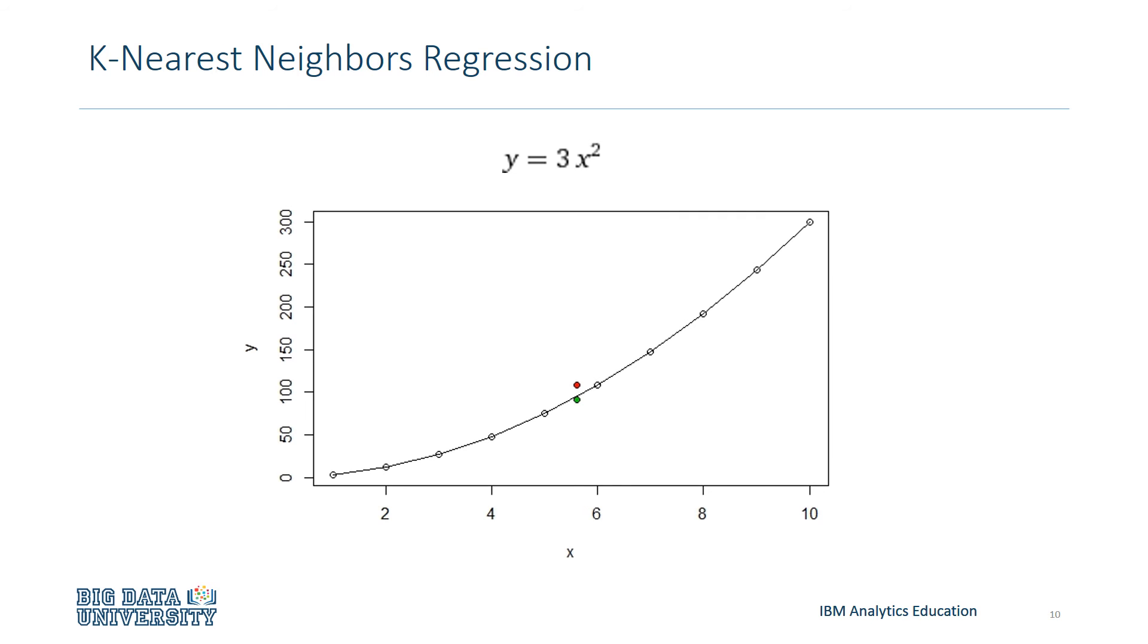First, let's consider the one-nearest-neighbor method as an example. In this case, we search the training set and locate the one closest to the query point X. For this particular case, this happens to be X6. The outcome of X6, that is, Y6, is then taken to be the answer for the outcome of X, which is denoted as Y. Thus, for one-nearest-neighbor, we can write Y equals Y6. This point, XY, is represented by the red circle on the diagram.